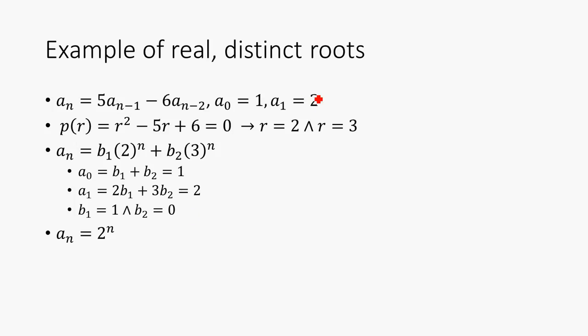So here's an example of real roots. We have this recurrence here: a_n equals 5*a_(n-1) minus 6*a_(n-2), and these are the initial conditions.